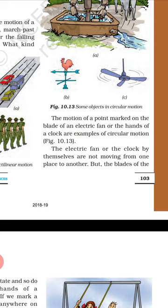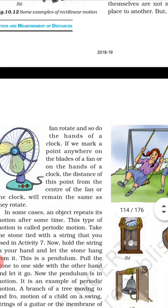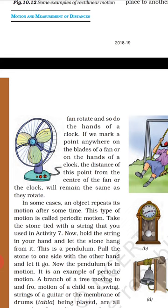Electric fan is an example. The clock's second hand — you can easily see it, it will move quickly. A fan rotates, and so do the hands of the clock. Hands of the clock also move in circular motion. The distance of this point from the center of the fan or the clock will remain the same as they rotate.